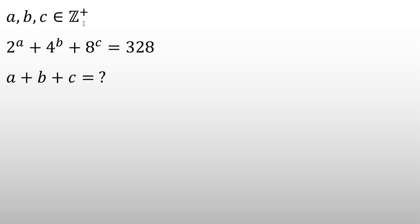A, B, C are positive integers, and 2 to the A plus 4 to the B plus 8 to the C equals 328. We want to find A plus B plus C.